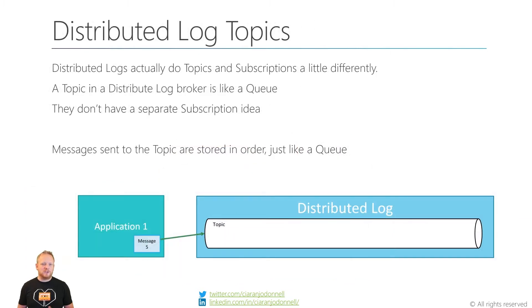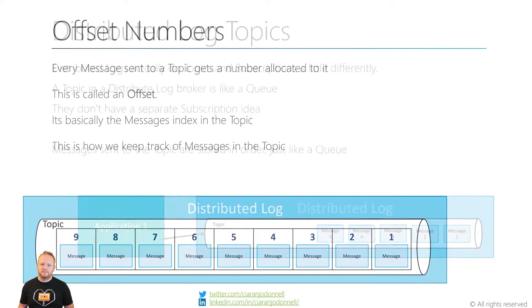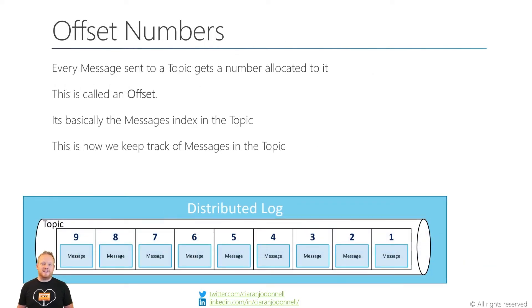However, on a distributed log style broker it actually works a little bit differently. A topic on one of these brokers is like a queue and they don't actually have a separate subscription idea at all. Messages that are sent to the topic are stored in order in the topic, just like they are in a queue. Every message that gets sent to a topic on one of these brokers gets a number allocated to it, and we call this number its offset. This is like the ID of the message — effectively its index in the topic — and it's how we keep track of messages.